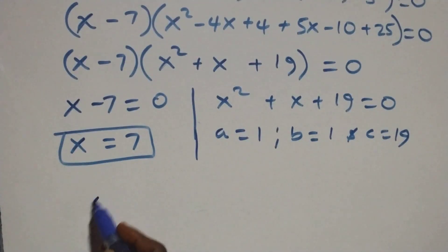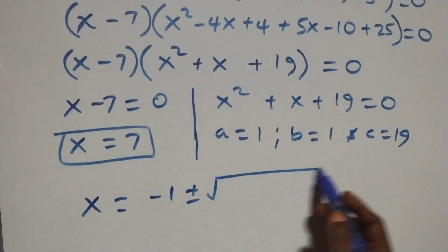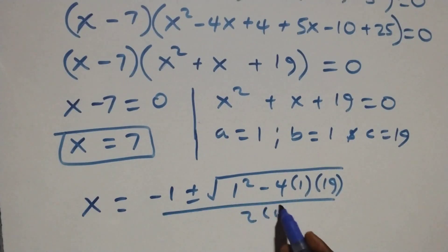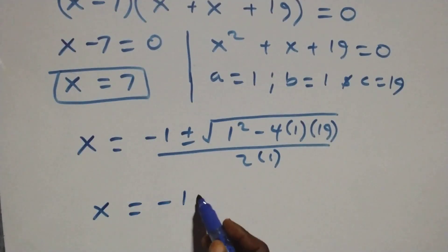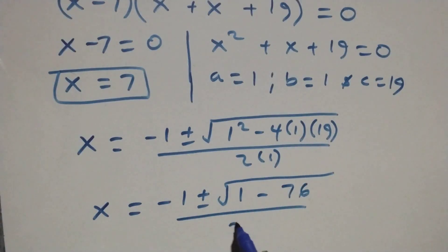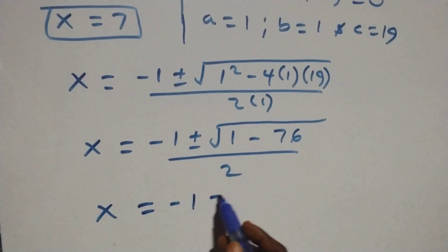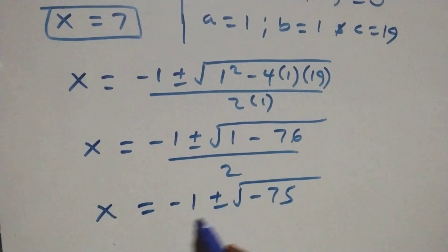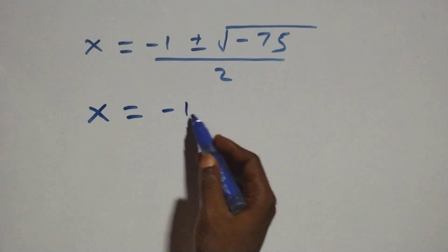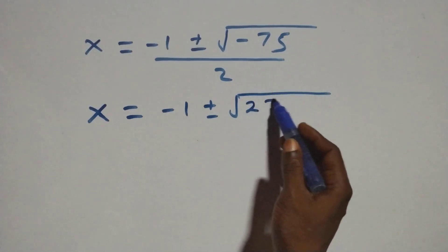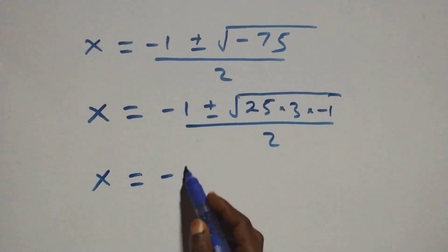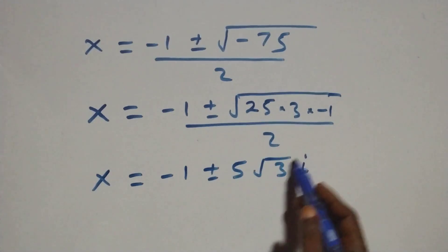Applying the quadratic formula, x equals negative 1 plus or minus square root of 1 squared minus 4 times 1 times 19, giving 76, over 2 times 1. This gives x equals negative 1 plus or minus square root of 1 minus 76, which is negative 75, over 2. We write this as negative 75 equals 25 times 3 times negative 1. Taking out root 25 which is 5, we have x equals negative 1 plus or minus 5i root 3, over 2. These are two complex solutions.